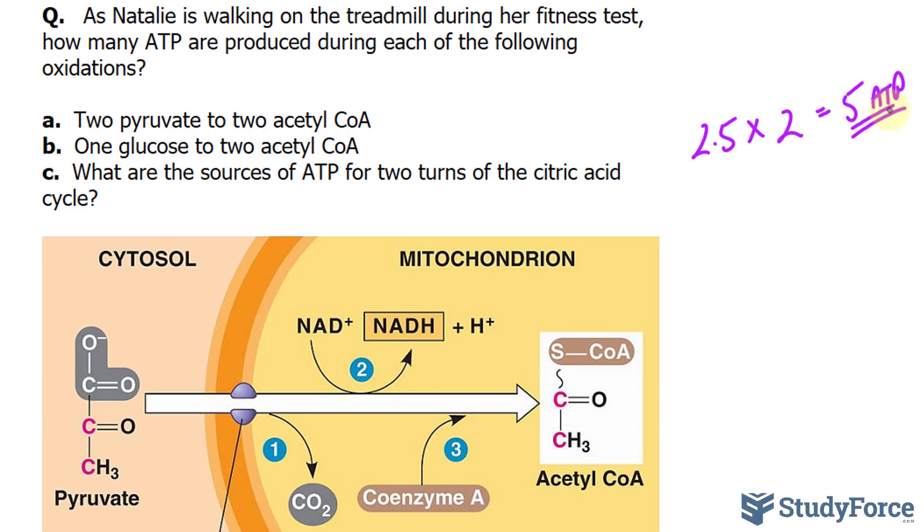four ATPs are made. But because two are required to activate glucose at the very beginning, only a net of two ATP molecules are made in glycolysis and two pyruvate molecules. Remember that. So, so far we have two ATPs made and two pyruvate molecules, which then are converted into two-acetyl-CoA.